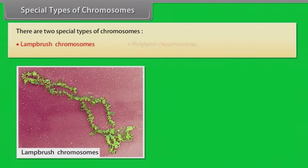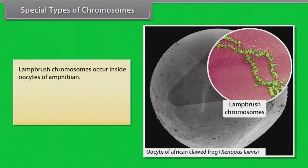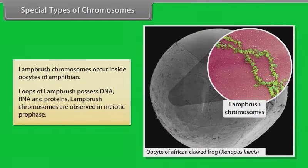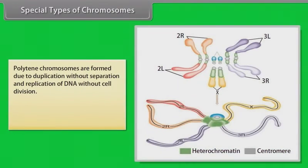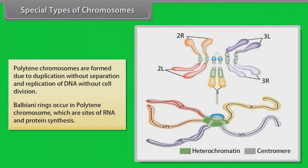Special types of chromosomes: There are two special types of chromosomes — lampbrush chromosomes and polytene chromosomes. Lampbrush chromosomes occur inside oocytes of amphibians. The loops of lampbrush chromosomes possess DNA, RNA, and proteins, and are observed in meiotic prophase. Polytene chromosomes occur in cells of some insects and in oocytes they occur in diplotene. Polytene chromosomes are formed due to duplication without separation and replication of DNA without cell division. Balbiani rings occur in polytene chromosomes and are sites of RNA and protein synthesis.